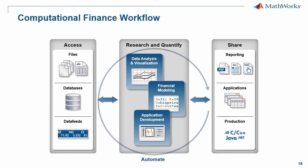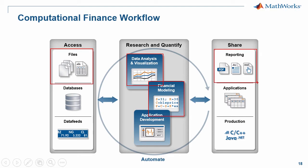Going back to the workflow slide, let's relate it to what we followed during our example. First, our data came in from an Excel spreadsheet using an interface. We used plotting tools to gain insight into the data. Then we used portfolio optimization libraries for mean-variance optimization. In the last step, we generated a static report with a click of a button. You'll notice we've only traversed a narrow path — there are many other options available. Over the next couple of slides we'll extend these concepts — other data access options, financial modeling libraries, and ways to share work as reports or applications.